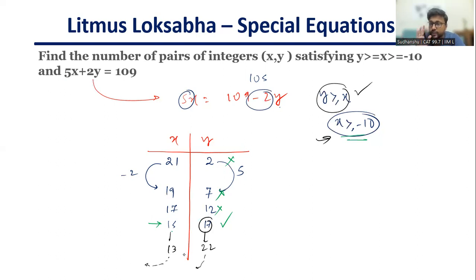Now x will keep on reducing: 15, 13, 11, goes on till minus 9. After minus 9, it will become minus 11, then x will not be greater than or equal to minus 10. So I have to take this till minus 9. How many numbers are there?